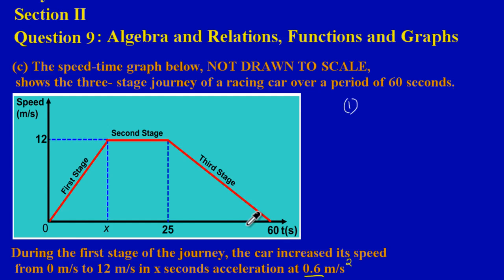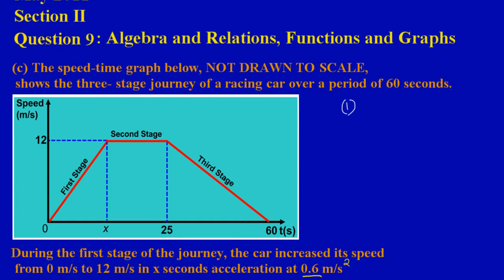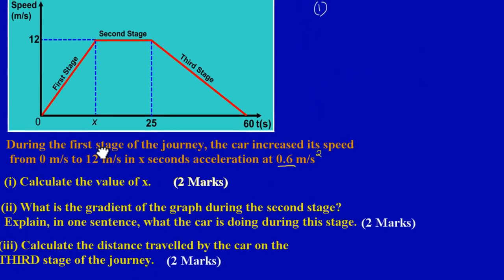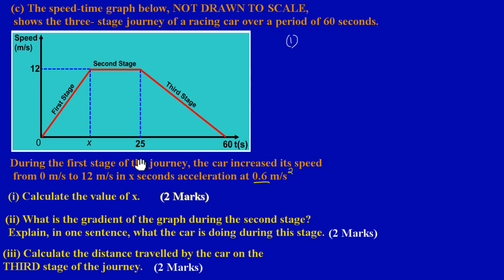The question states that during the first stage of the journey, the car increases its speed from zero meters per second to 12 meters per second in X seconds — we don't know how many seconds it took. However, during that time the acceleration of the car was 0.6 meters per second squared. Let's look at the questions they're asking us to answer based on this information.